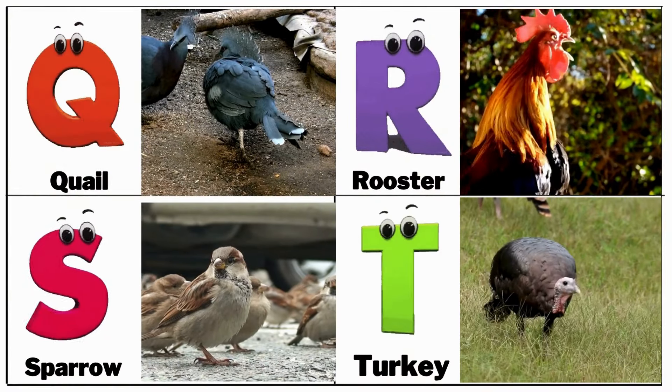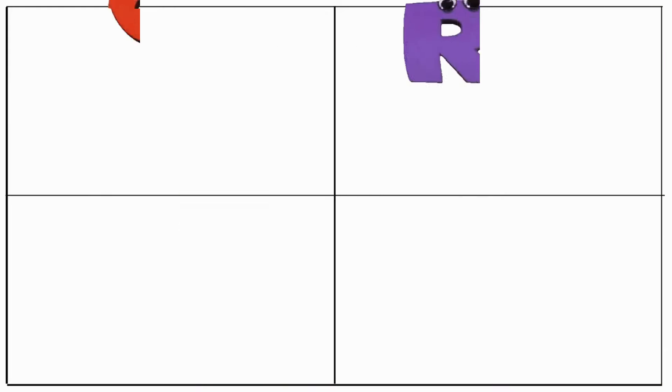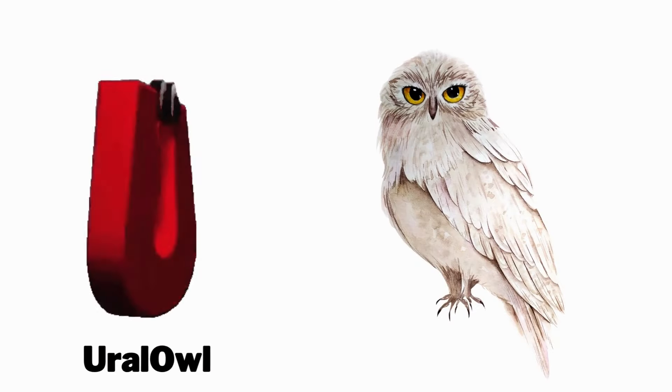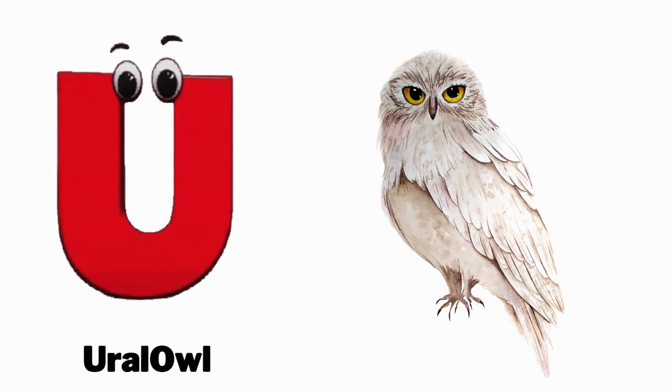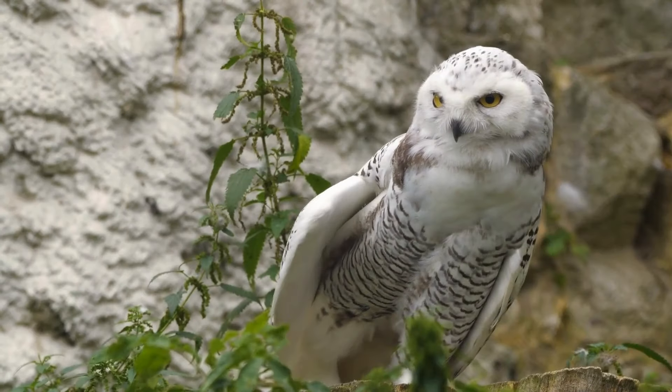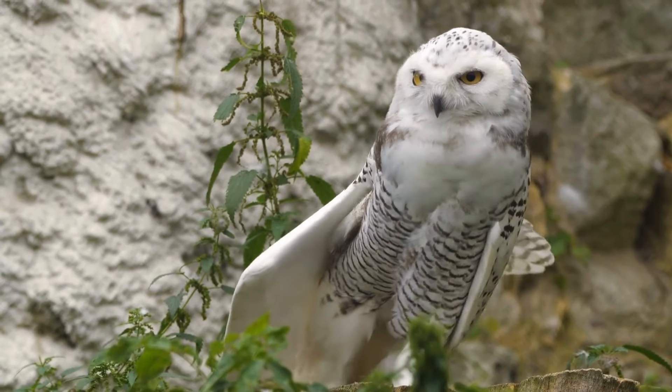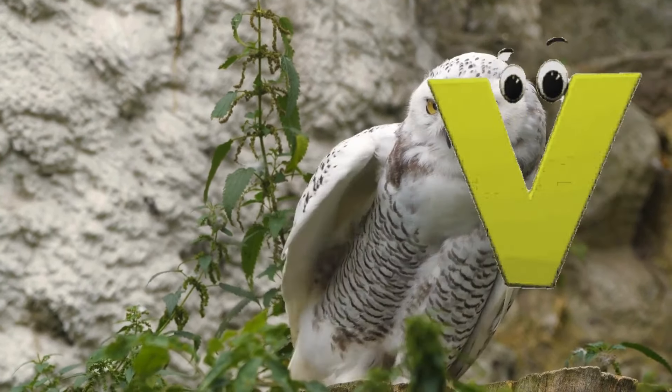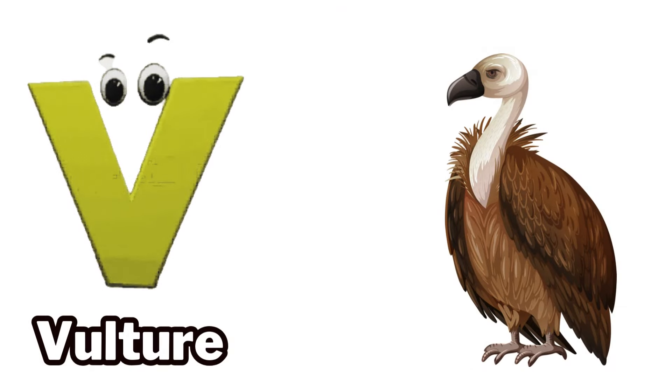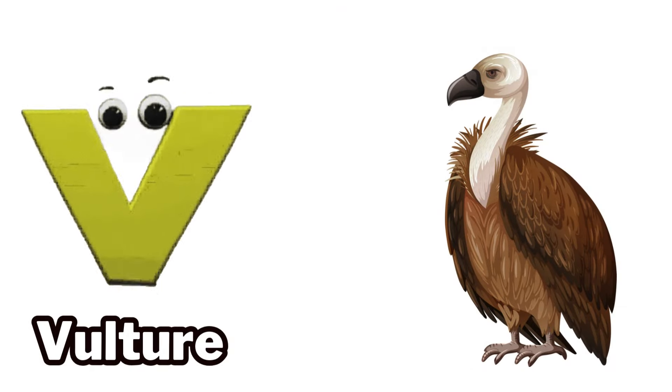U is for uro owl, uro owl uro owl. V is for vulture, v v vulture.